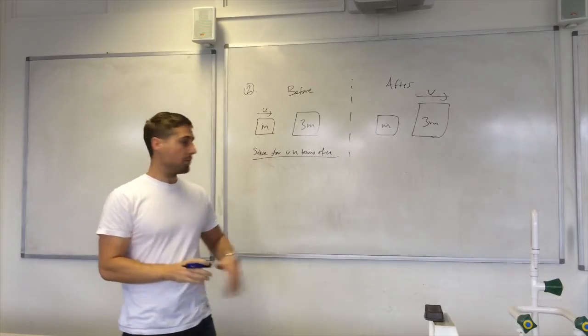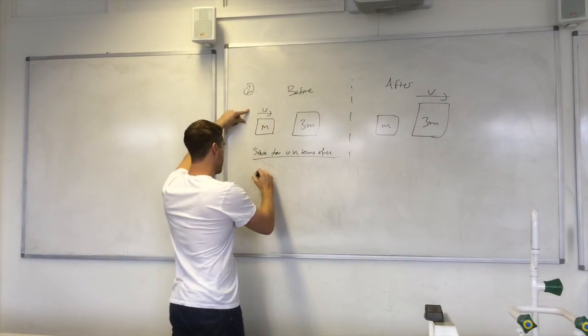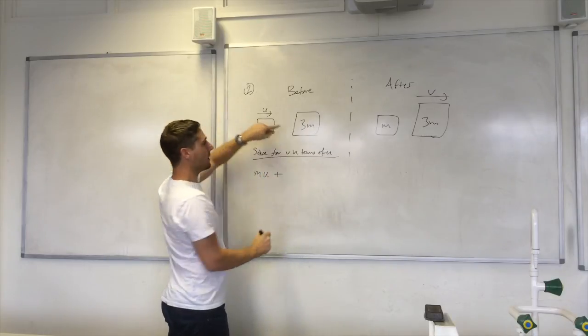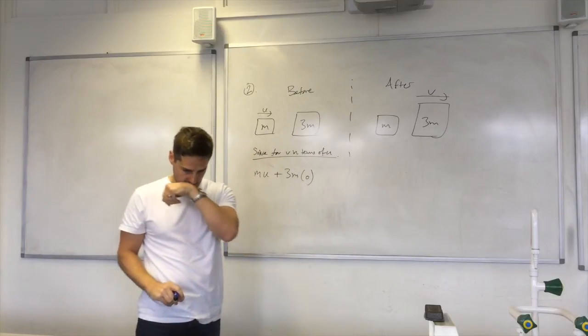Now let's see what the solution is for that. Alright. Total momentum before on this side. m times u for this object. Plus 3m times 0.